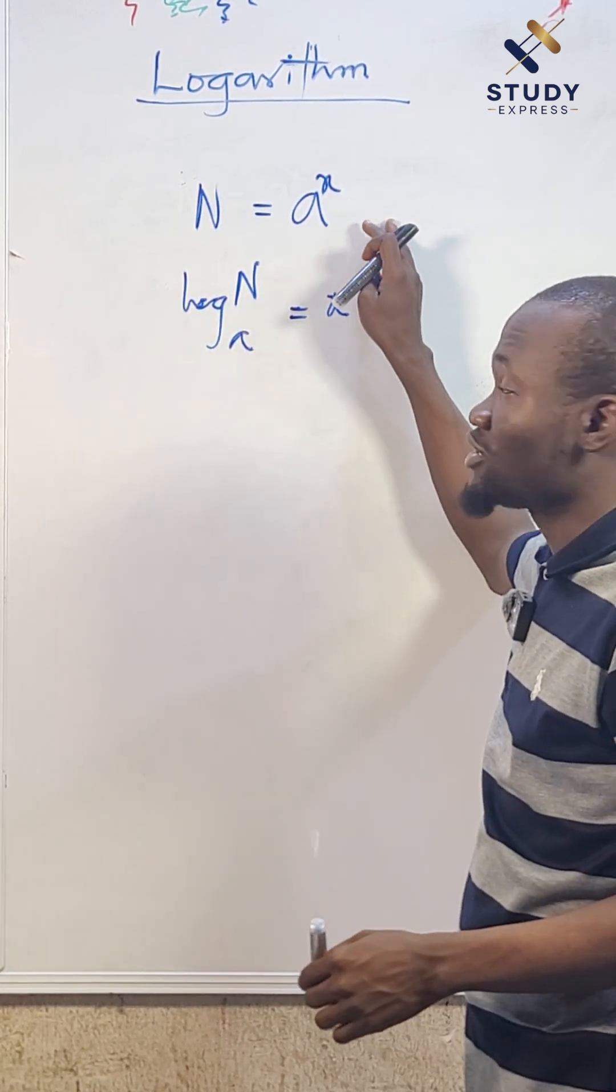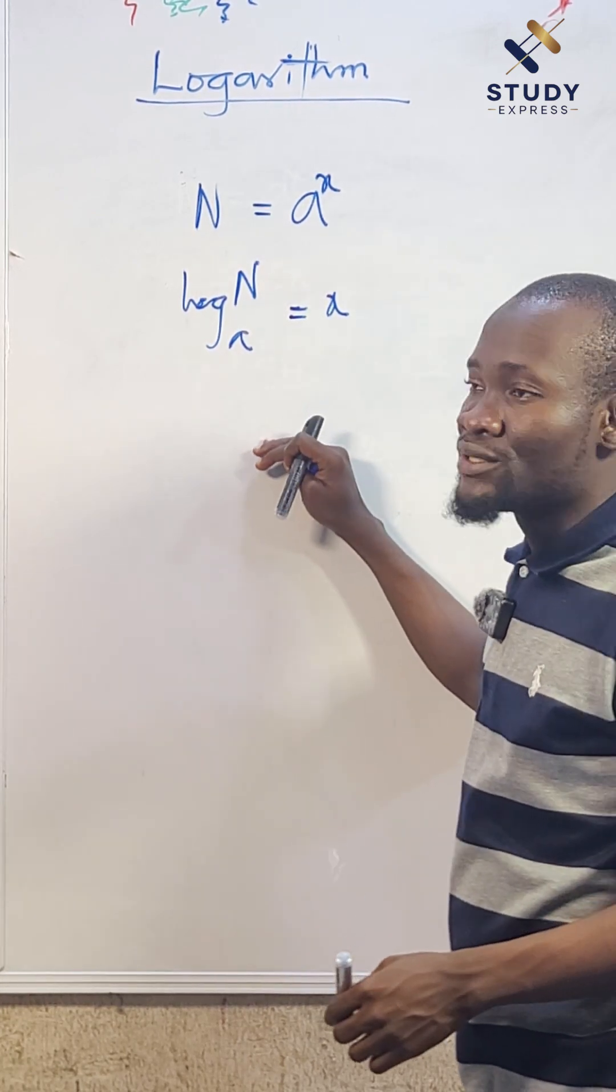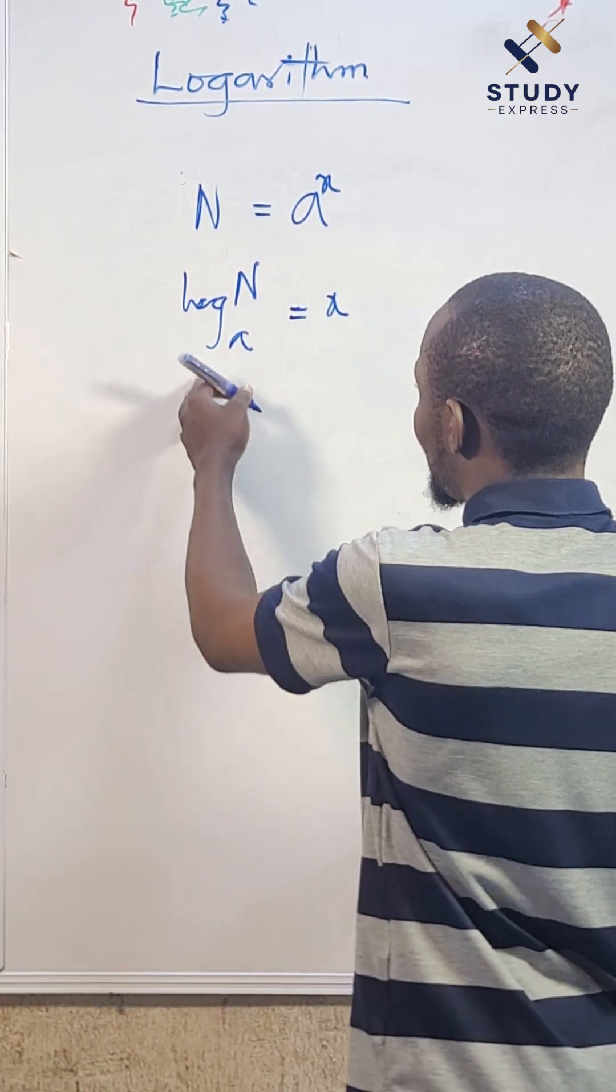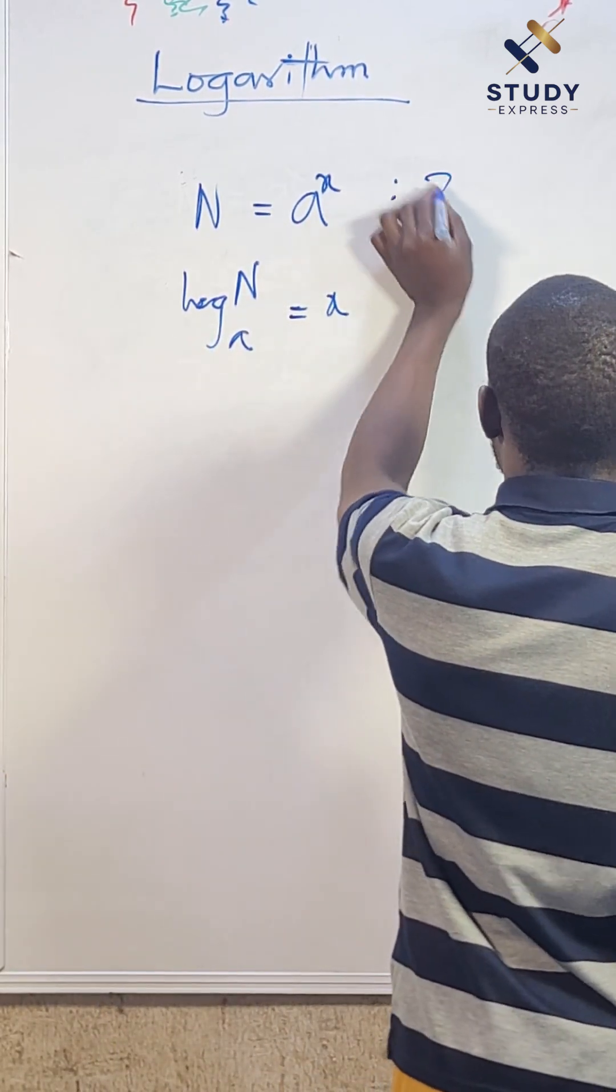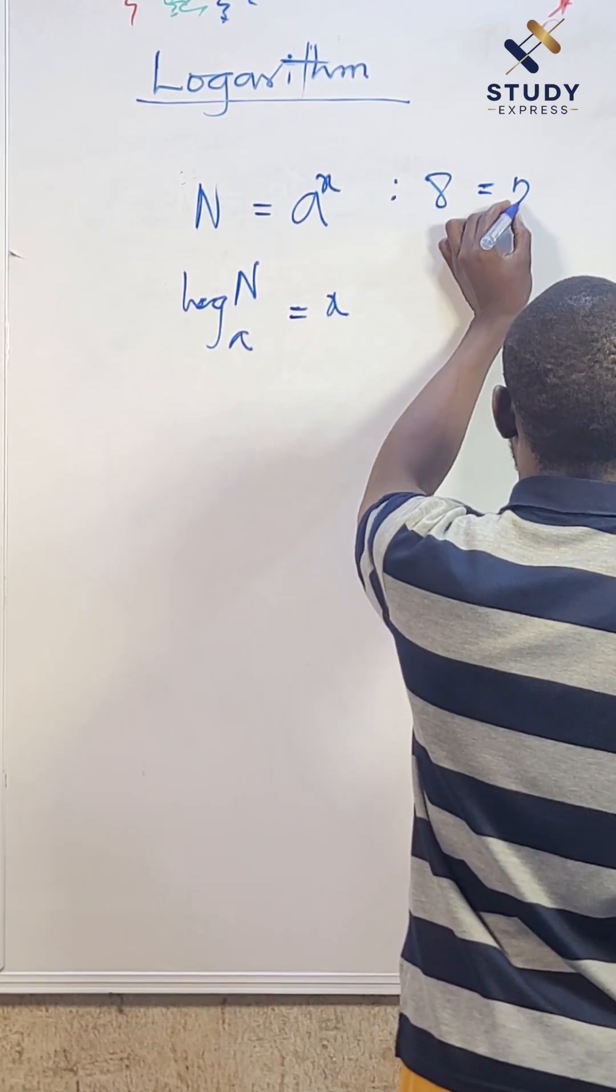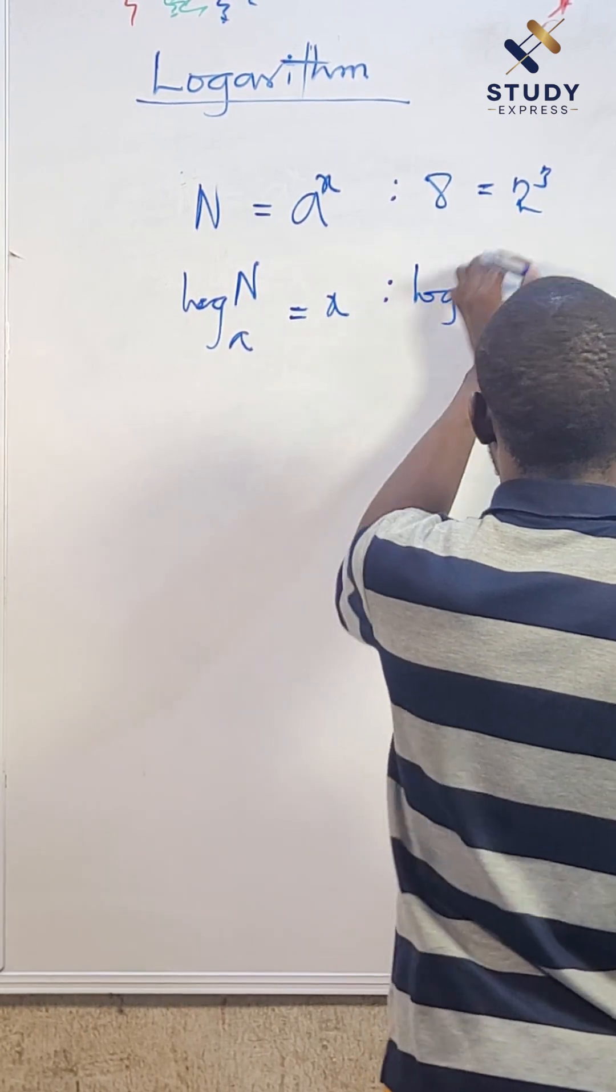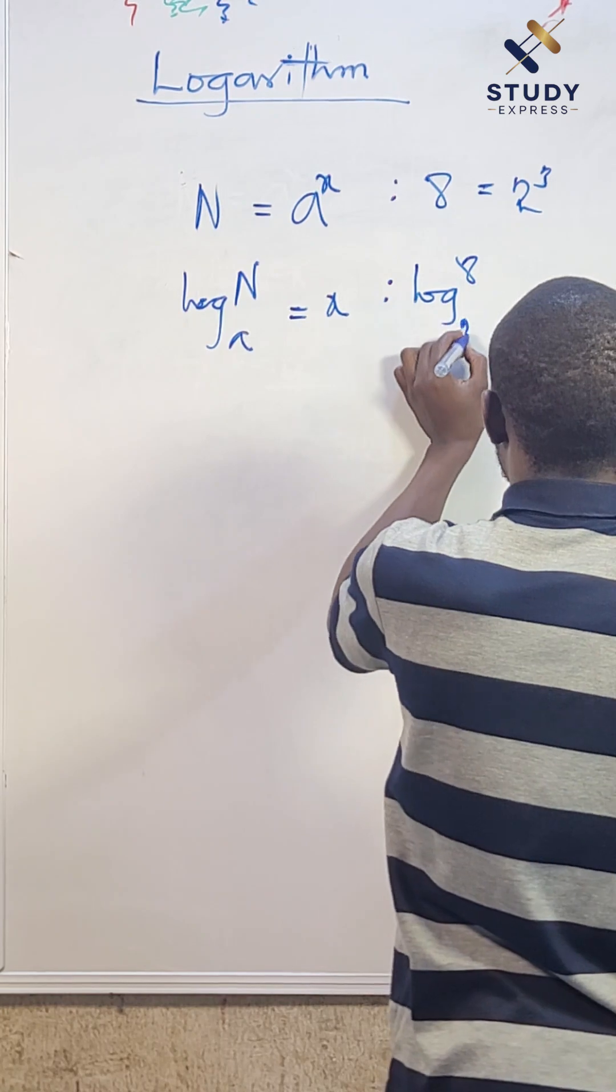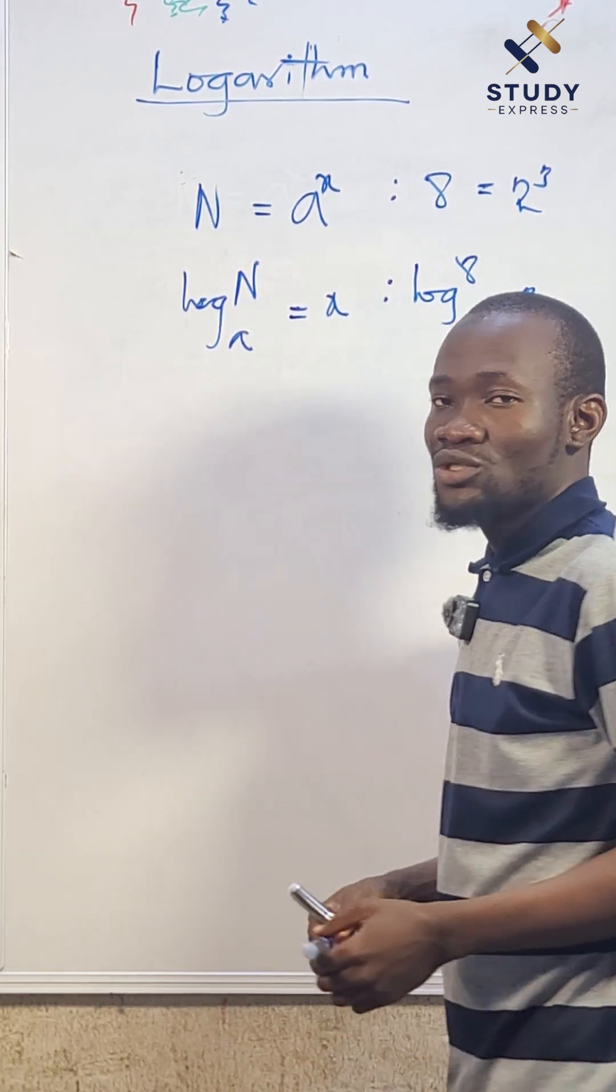This is the logarithmic form of that index form. A good example is: let's say 8 is 2 raised to power 3. So we're going to have log 8 to base 2 will give us 3. This is exactly what we are trying to explain.